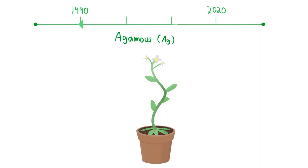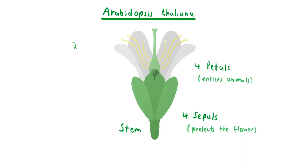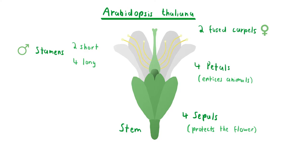Arabidopsis produces typical mustard flowers, which contain four concentric whorls of organs. These mustard flowers characteristically have four green sepals, four white petals, two short and four long stamens, which are the male reproductive organs, and finally two fused carpels, which are the female reproductive organs. In 1990, flower development was not well understood. However, it was known that mutations in certain genes could induce transformations in floral development.